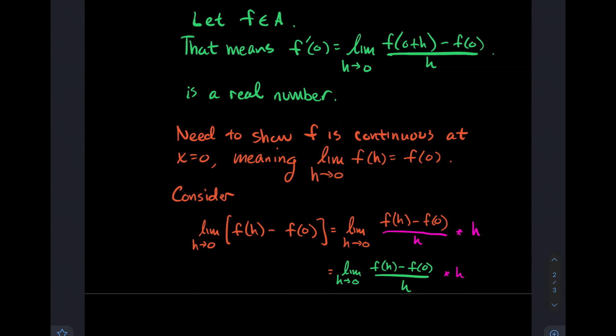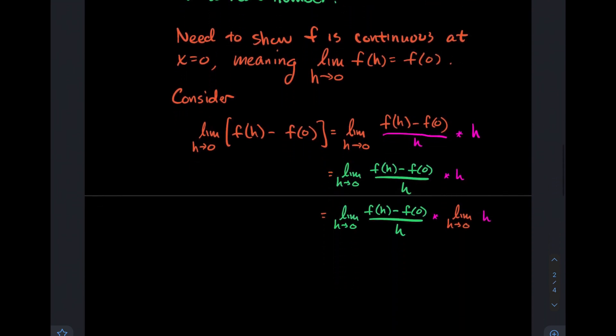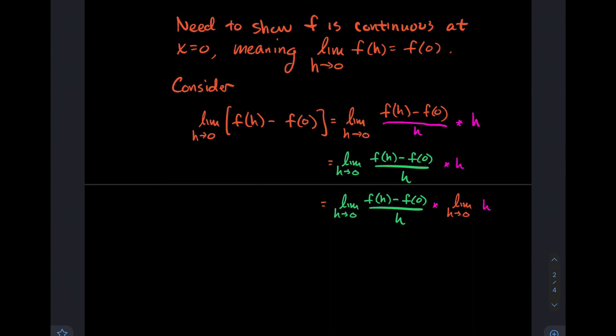Here is where I'm going to invoke the hypothesis. There's one more step where I'm going to split this up as the limit of the green times the limit as h goes to 0 of h. I invoke my hypothesis here that that green limit is the number f'(0). I'm using my limit laws—that when I've got the limit of two functions that I know exist and they're multiplied, then you can split it up and multiply later.